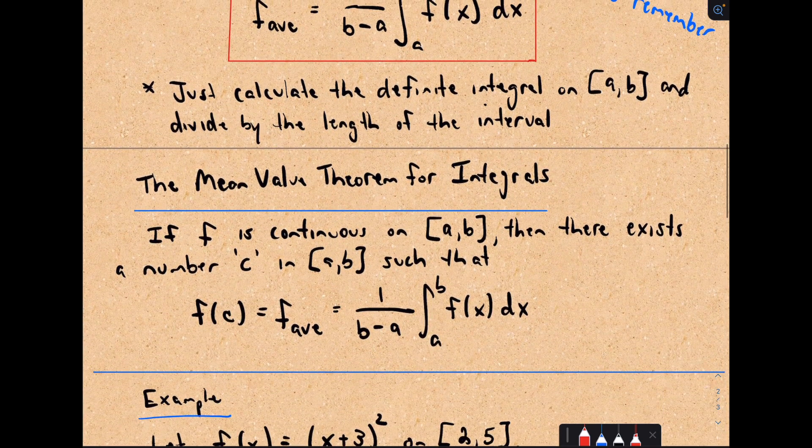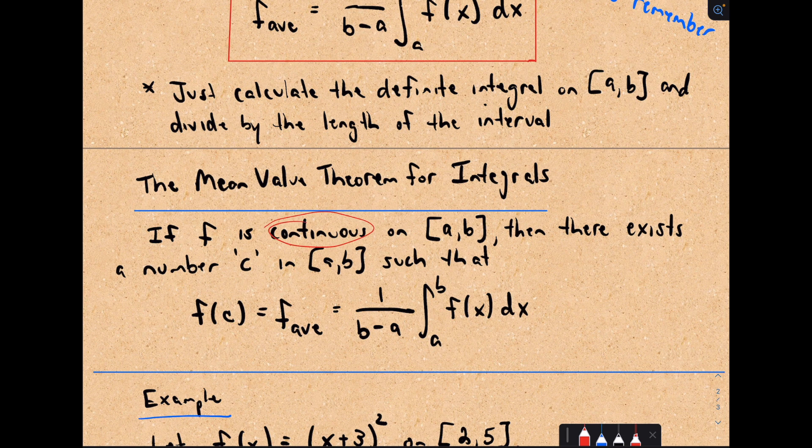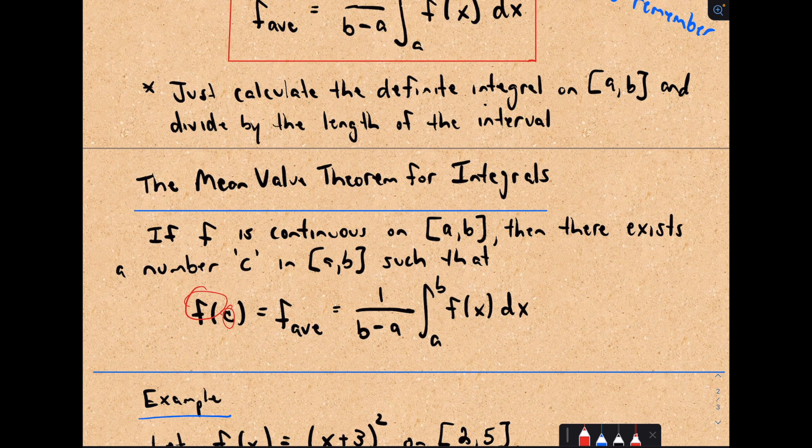Let's talk about the mean value theorem for integrals. It says if f is continuous on a to b, there exists a number c in that interval a to b so that when you plug c into your function, you get the average value out.